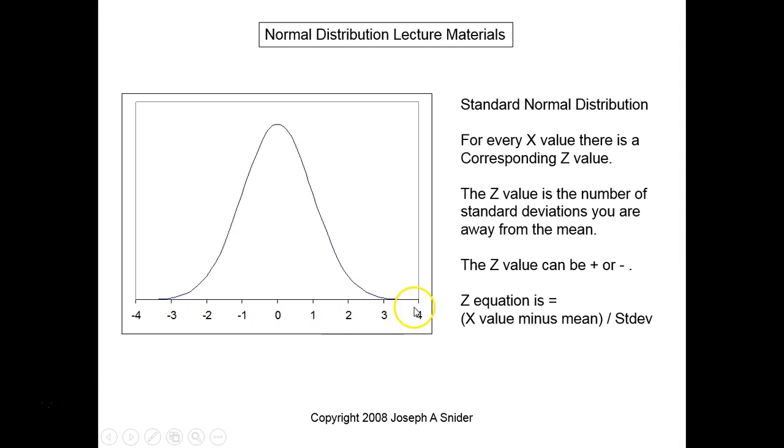If your mean is 100 and the standard deviation is 10, then 110 would be here, one standard deviation away from the mean. So the Z value is how many standard deviations you are away from the mean, minus side or plus.